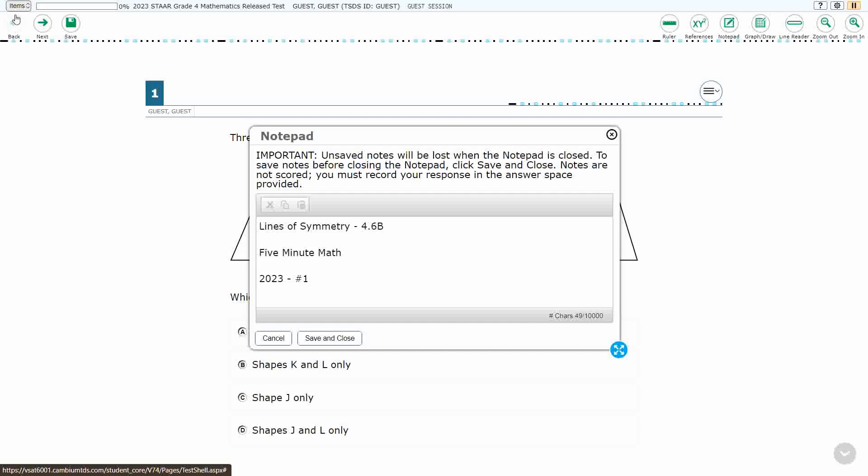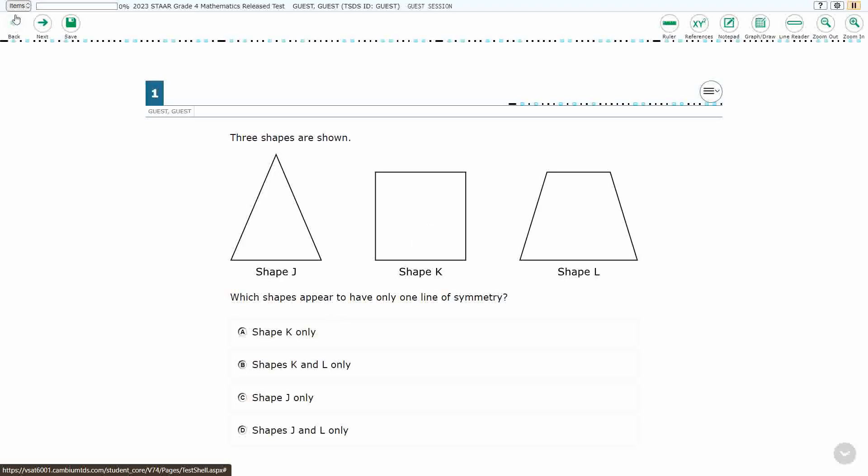Hello, and welcome to 5-Minute Math. Today we are looking at the 4th grade concept of Lines of Symmetry. This is standard 4.6b in the great state of Texas. We are using item number 1 of the 2023 released STAR test.